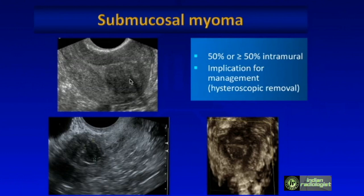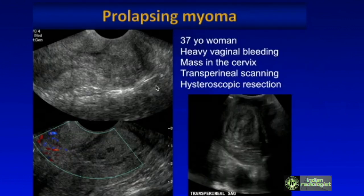A submucosal myoma distorts the endometrium with classic hypoechoic, shadowing appearance. We need to tell the clinician whether it is less than or more than 50% intramural, because if predominantly submucosal, hysteroscopic removal is possible; otherwise, myomectomy may be needed. The 3D imaging helps localize submucosal myomas correctly — in this particular case it is more than 50% submucosal.